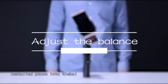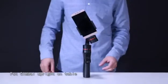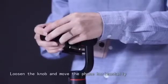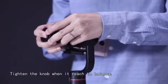Adjust the balance. Install phone into Jimbo, put Jimbo upright on table, watch and adjust the balance of Jimbo. Loosen the knob and move the phone horizontally. Tighten the knob when it's reached balance.